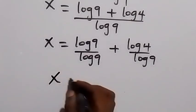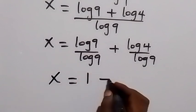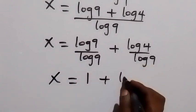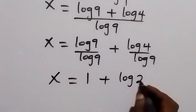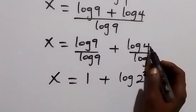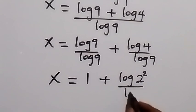We have x now equals to 1 plus here. We can write this as log 2 squared, because 2 squared is the same thing as 4, then divide by log 3 squared. 3 squared is the same thing as 9.